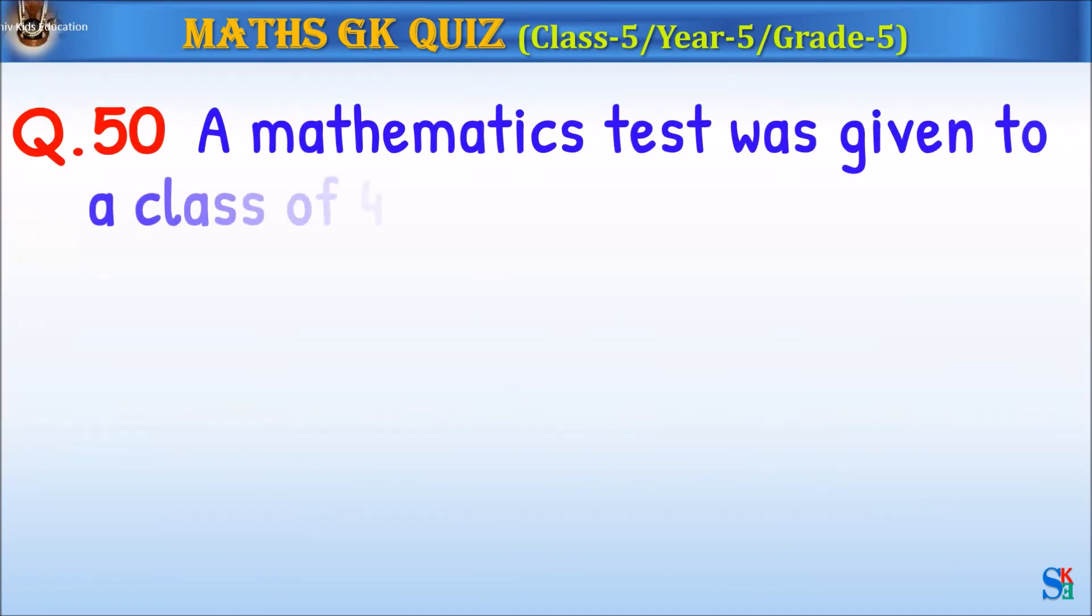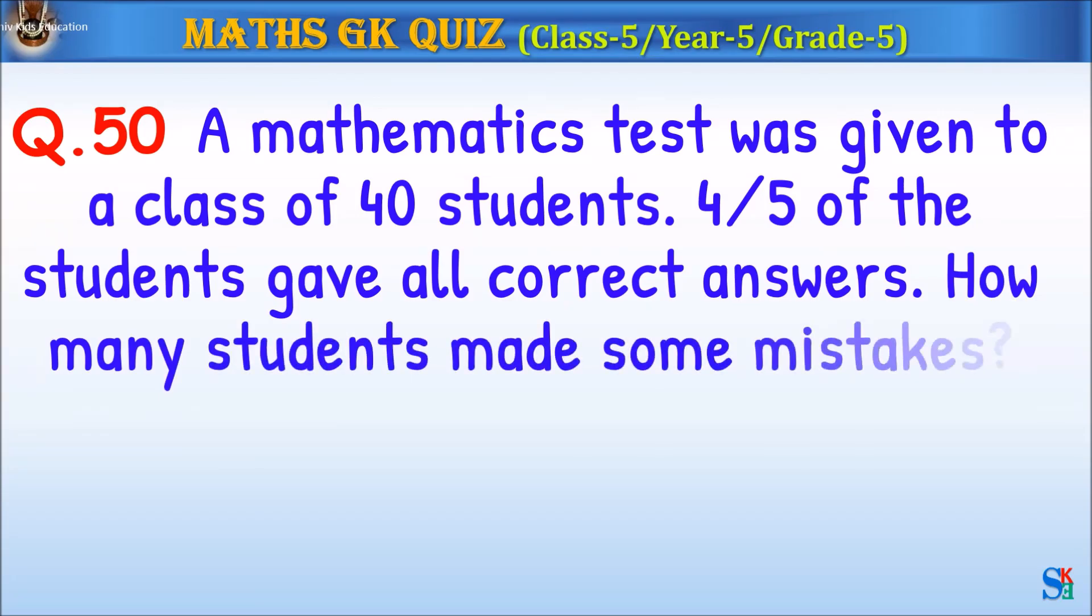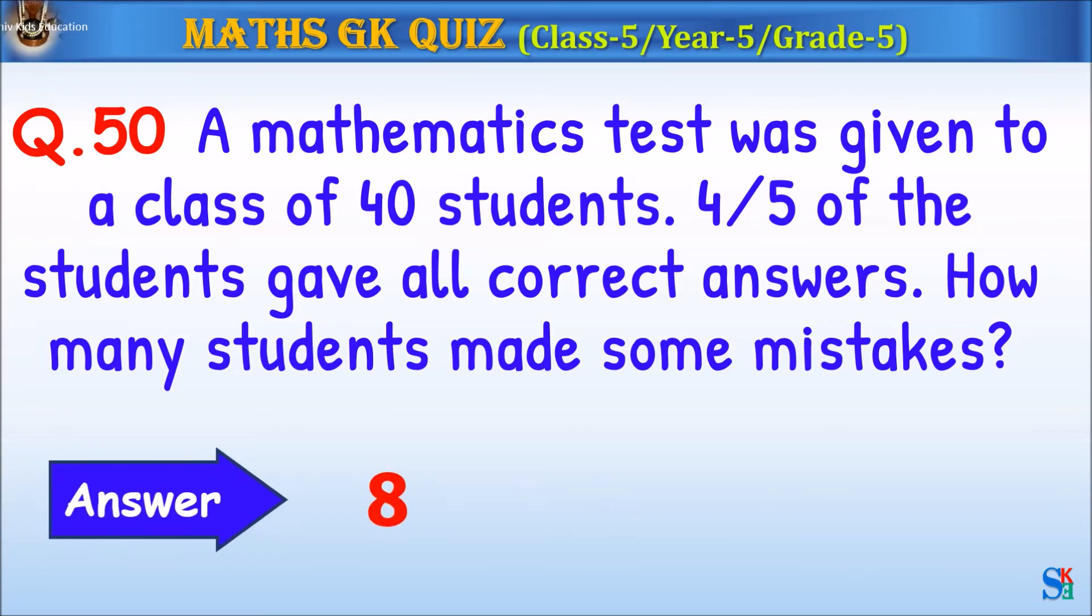Question 50: A mathematics test was given to a class of 40 students. 4 fifths of the students gave all correct answers. How many students made some mistakes? The answer is 8.